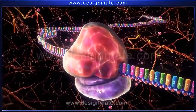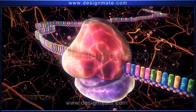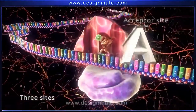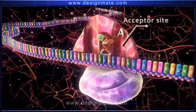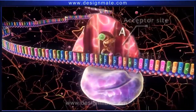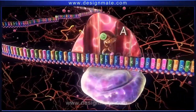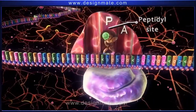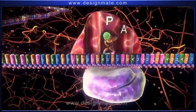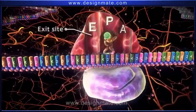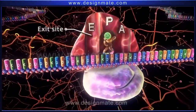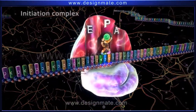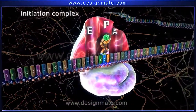The large subunit shows three sites: the Acceptor site, or the A site; the peptidyl site, or the P site; and the exit site, or the E site. This whole unit forms the initiation complex.